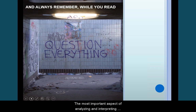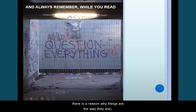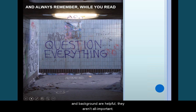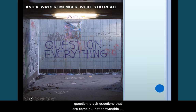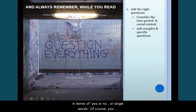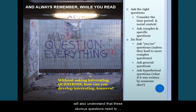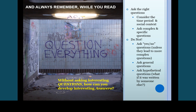The most important aspect of analyzing and interpreting literature is asking good questions. Consider why things are the way they are, and please assume there are reasons why things are the way they are. Although the author's intent and background are helpful, they are not all-important. If you offer a logical interpretation of a text, I will accept it. If your analysis or paper asks interesting questions of the text, you've already won half of your battle. What I mean by important and interesting questions is that you ask questions which are complex, not answerable in terms of yes or no, or single words.